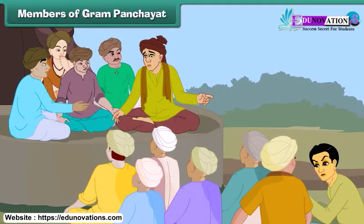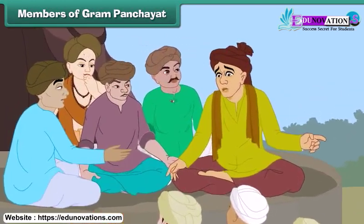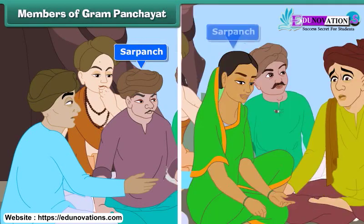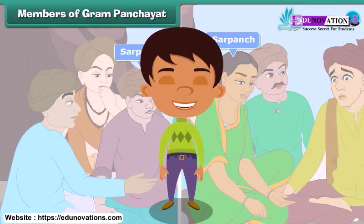A gram panchayat consists of five members. The head of the gram panchayat is called the village pradhan or the sarpanch. The sarpanch of a gram panchayat can be a male or a female. The members of a gram panchayat hold meetings to solve the problems of the villagers.